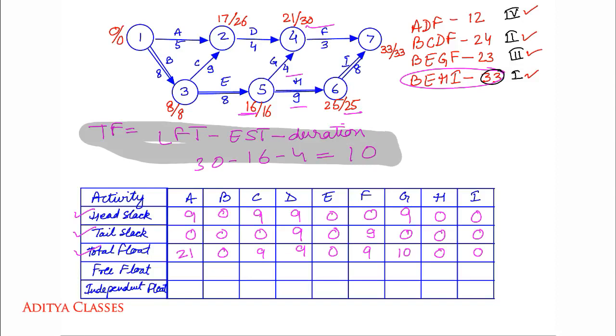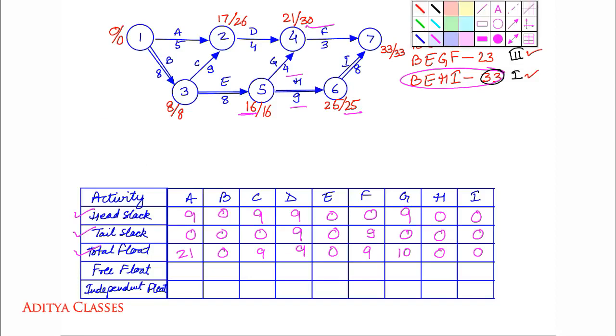So now that we have head slack done, tail slack done, total float done, now we have very simple formula for free float and independent float. Free float equals total float minus head slack. And independent float equals free float minus tail slack. For A: free float is 21 minus 9, giving 12. Independent float is 12 minus 0, which is 12. We can just run through them, applying the formulas. We are getting some negative independent floats.